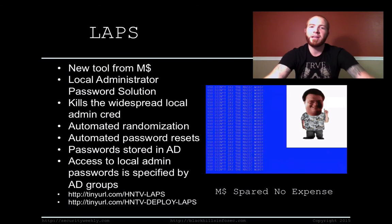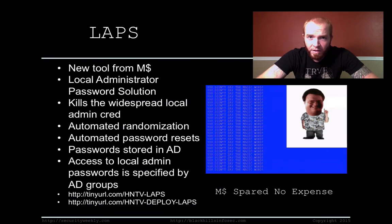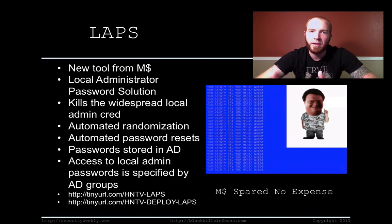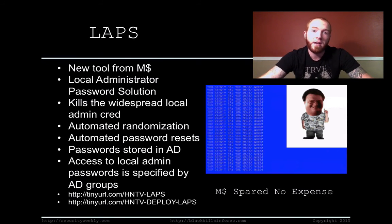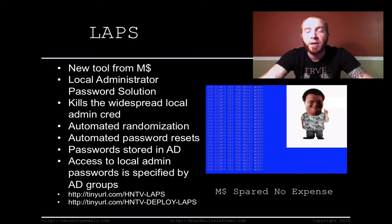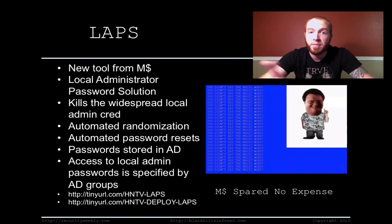Microsoft came out with an awesome fix — a tool called the Local Administrator Password Solution, or LAPS for short. LAPS essentially kills the problem of the widespread local administrator credential. The way it does this is it automates randomization of every single local admin password on every single system. So as an attacker, if I gain access to a system, escalate privileges, dump the hash, or crack the password, it's not going to be usable on any other system within the environment. That creates a major wall in the process of privilege escalation and domain compromise for an attacker.